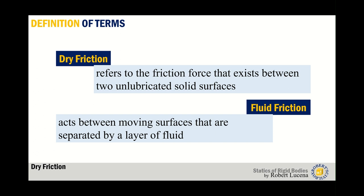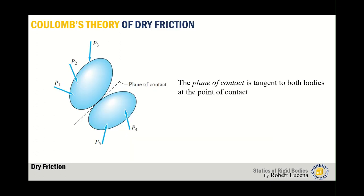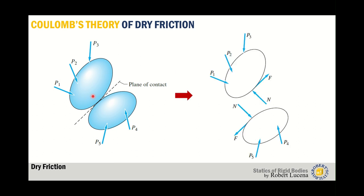Dry friction refers to the friction force that exists between two unlubricated surfaces. In today's topic we focus only on dry friction generated between two objects in contact. The other type is fluid friction, which acts between moving surfaces separated by a layer of fluid. In Coulomb's theory of dry friction, the plane of contact between two bodies is tangent to both bodies, as shown in the figure.